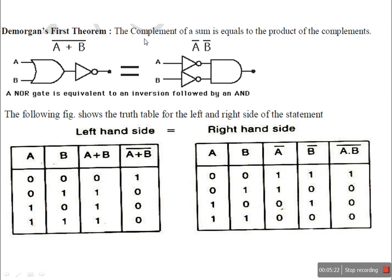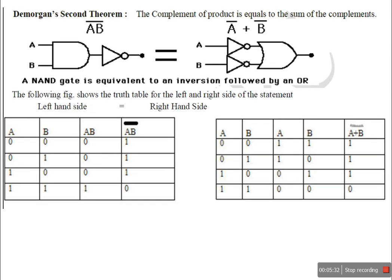The left side output and right side output columns match, proving De Morgan's First Theorem: the complement of a sum is equal to the product of the complements. Then De Morgan's Second Theorem: the complement of a product is equal to the sum of the complements.